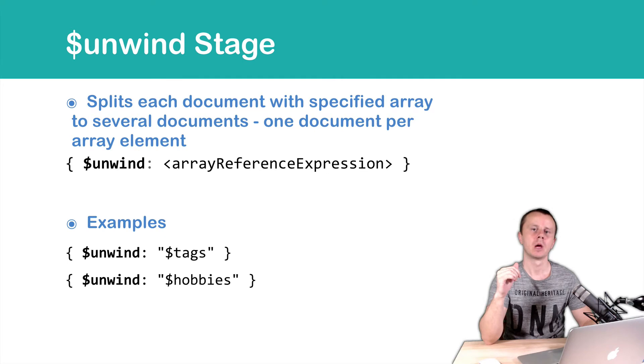What happens here? We take input documents, and if document contains for example tags array, we will split this document to several documents, and each of those documents will contain one raw value of the array instead of array.